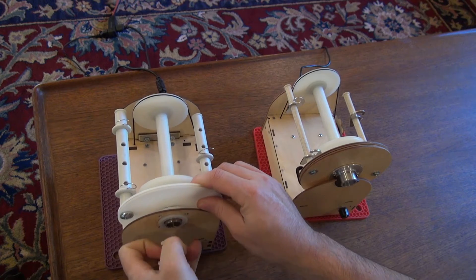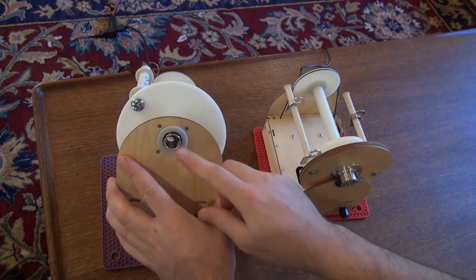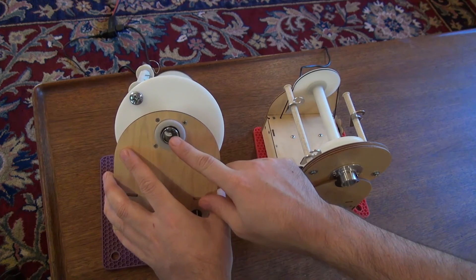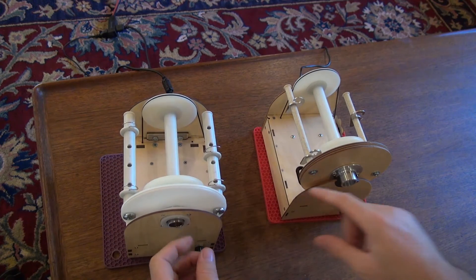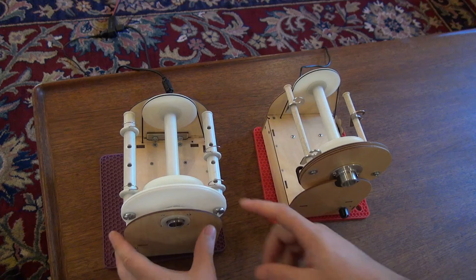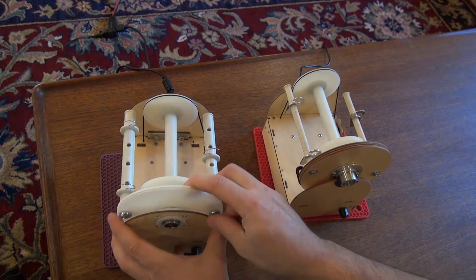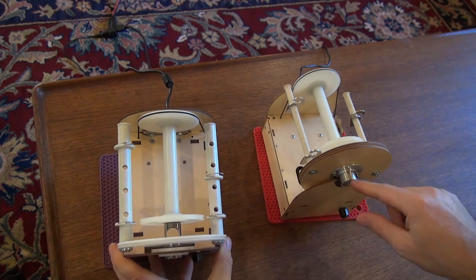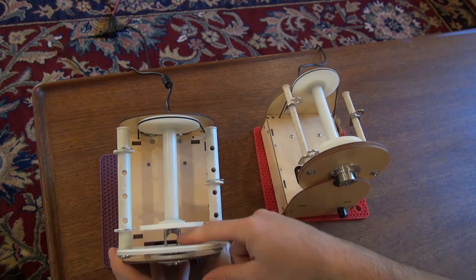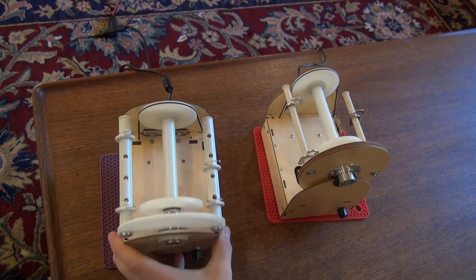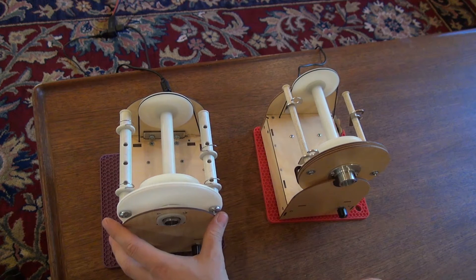Another thing I want to point out is the spindle, this thing right here, is all steel on the new version. On the previous version, it was aluminum, so this means that over time when the yarn was rubbing against the aluminum, it could actually create some grooves on the previous version. Being steel, this new version is much more durable and will last a lot longer.